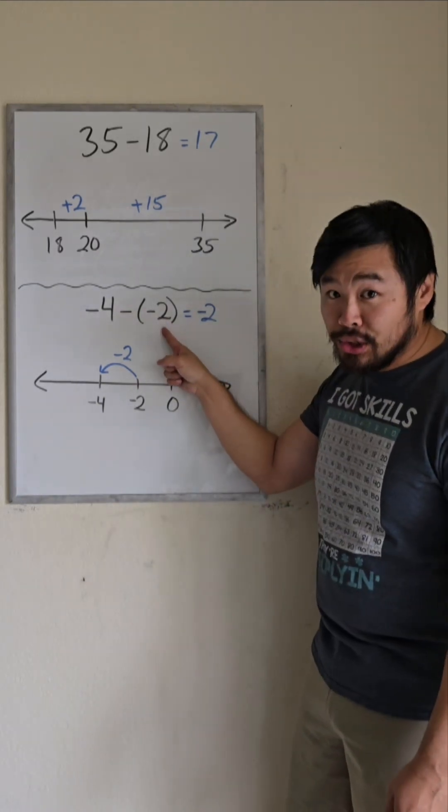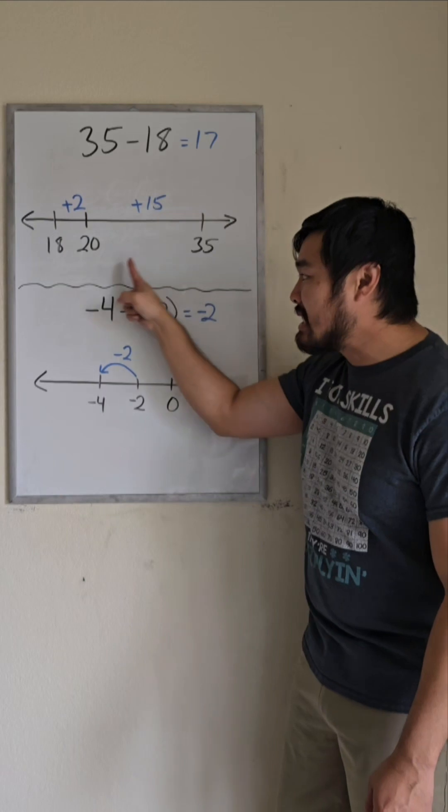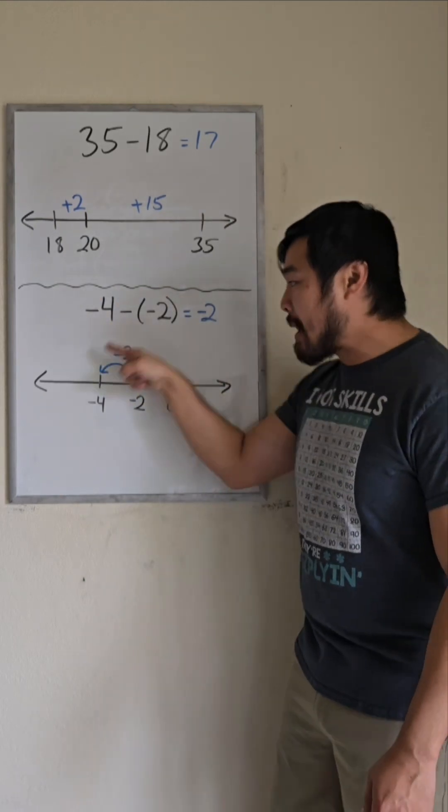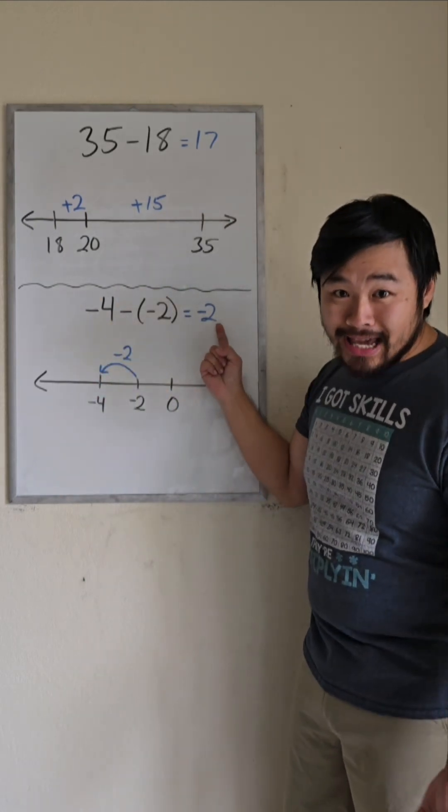If I start at negative 2 on the number line, how can I get to negative 4? Well, I would go back 2. So the answer is negative 2.